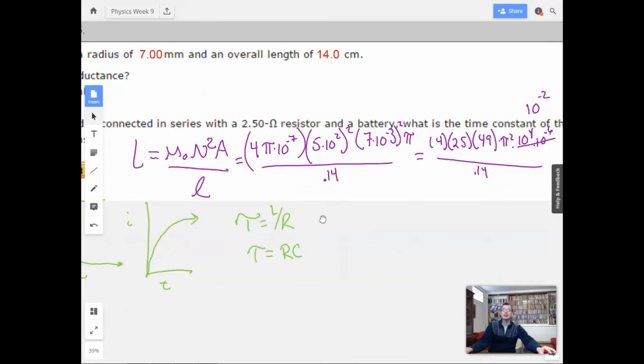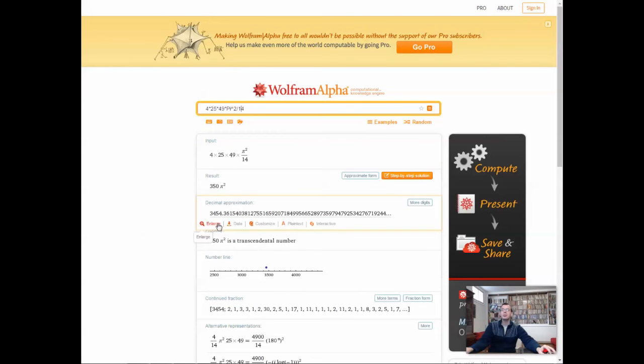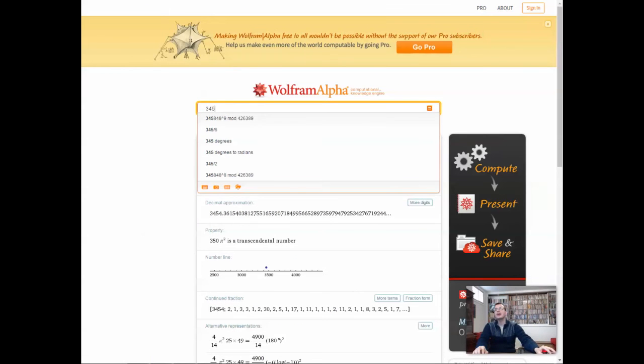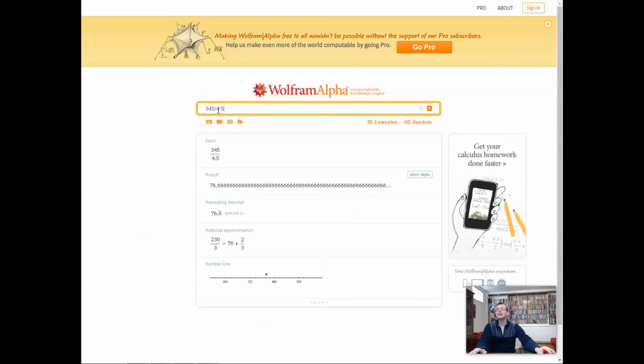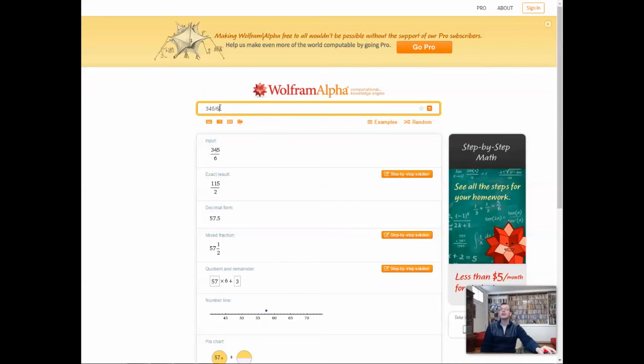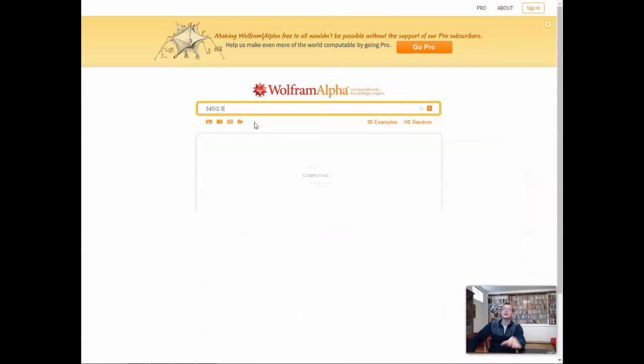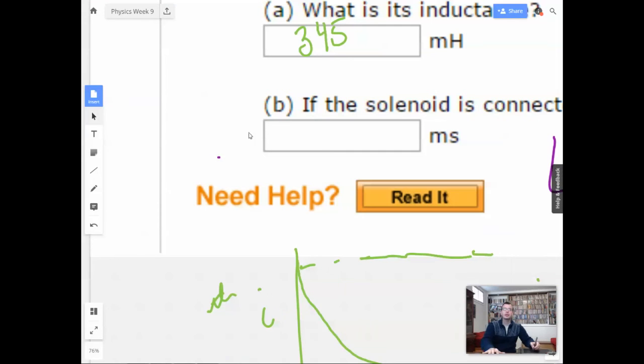So I should probably actually solve it then. So let's do 345 divided by 2.5. I'll do 345 divided by 2.5. And that's in millihenry, so we'll get milliseconds out of this. L over R. 2.5. And we have 138 milliseconds. I'm good at that.